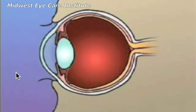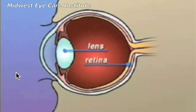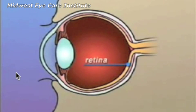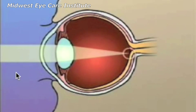The human eye is constructed like a camera, with a lens at the front and light-sensitive tissue at the rear. This tissue makes up the retina, which acts like a photographic film. In an eye that has perfect vision, light rays are focused by the lens to fall precisely on the retina.